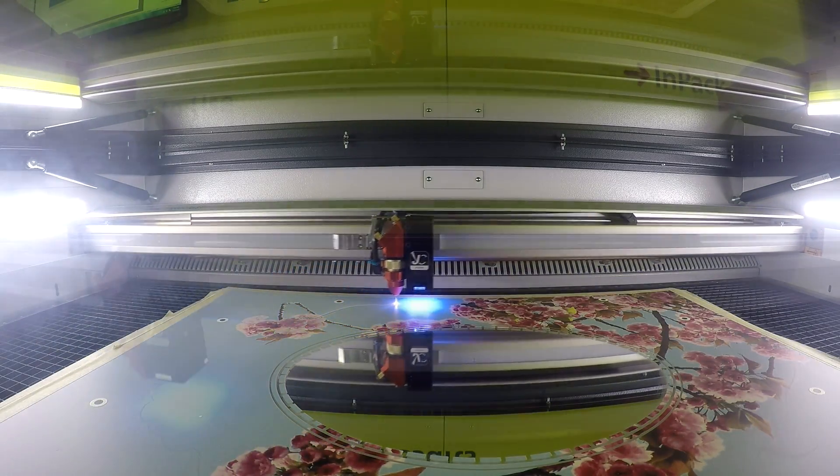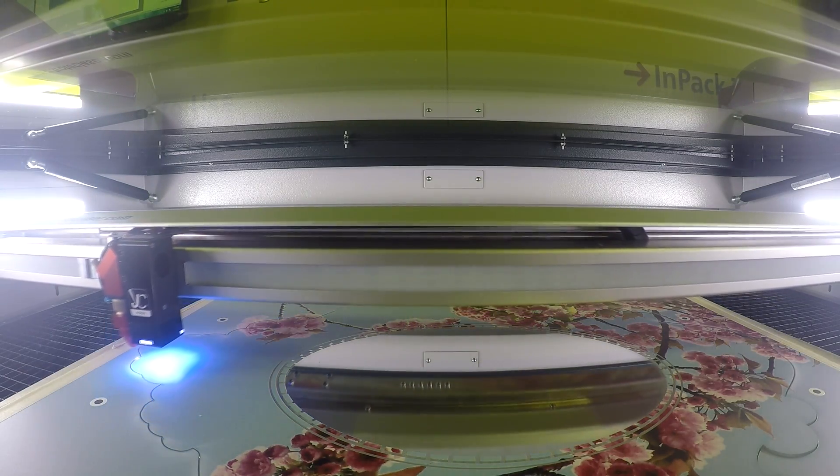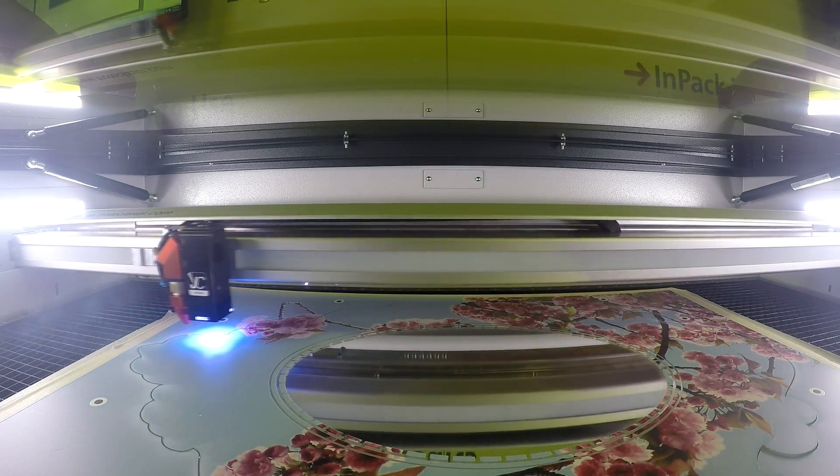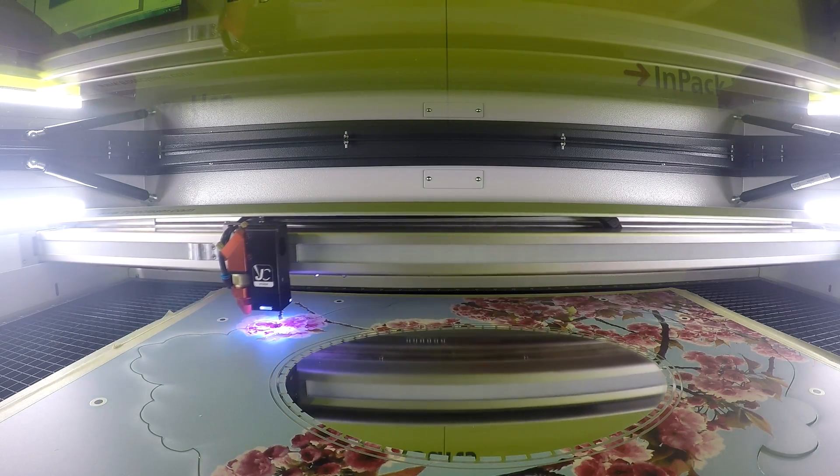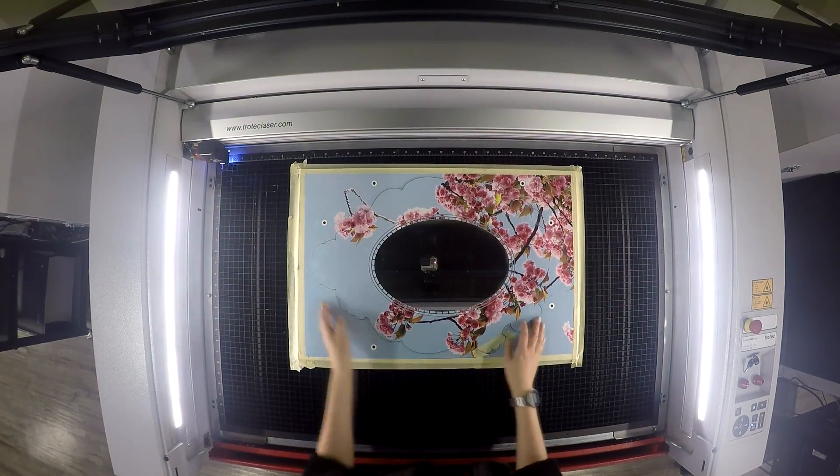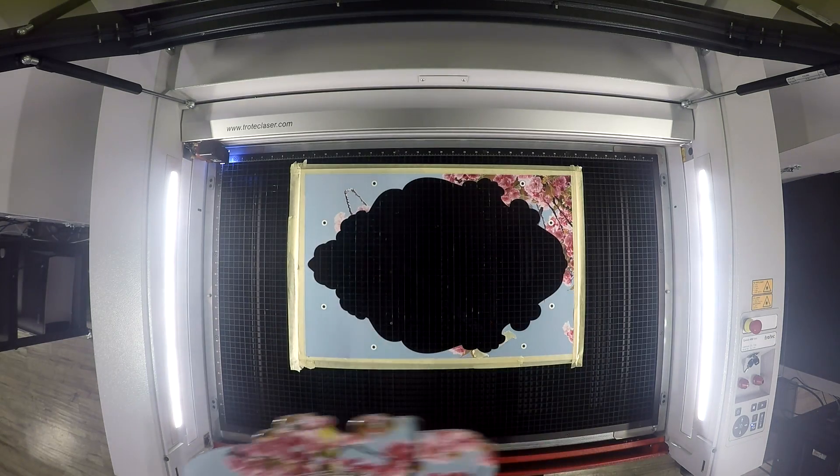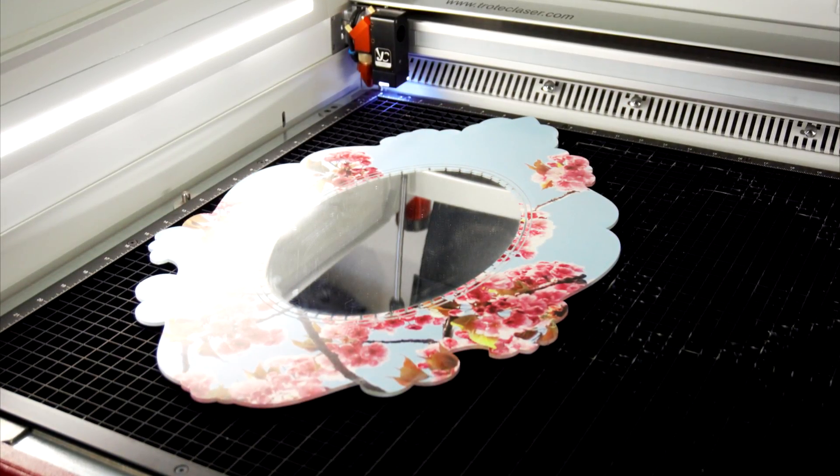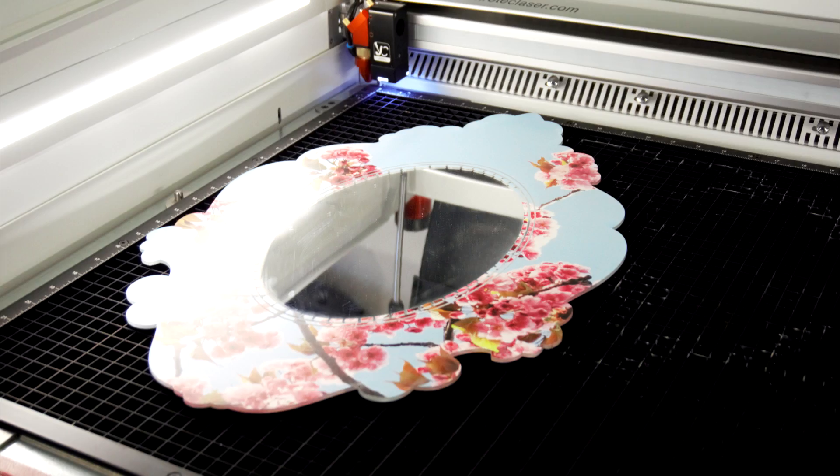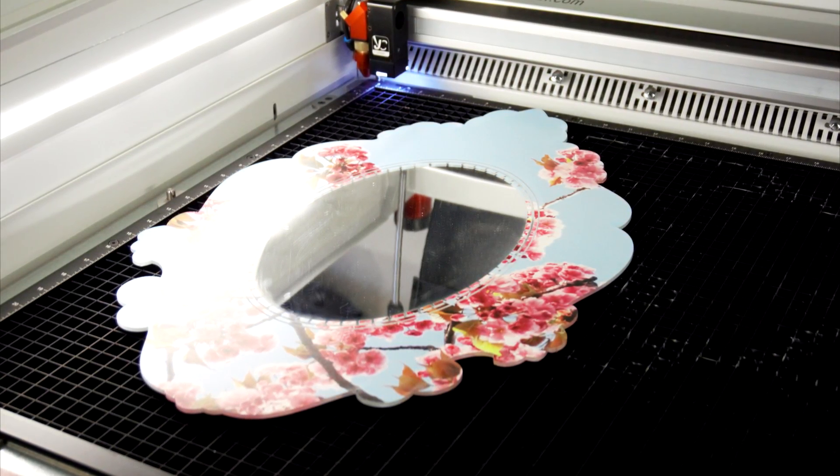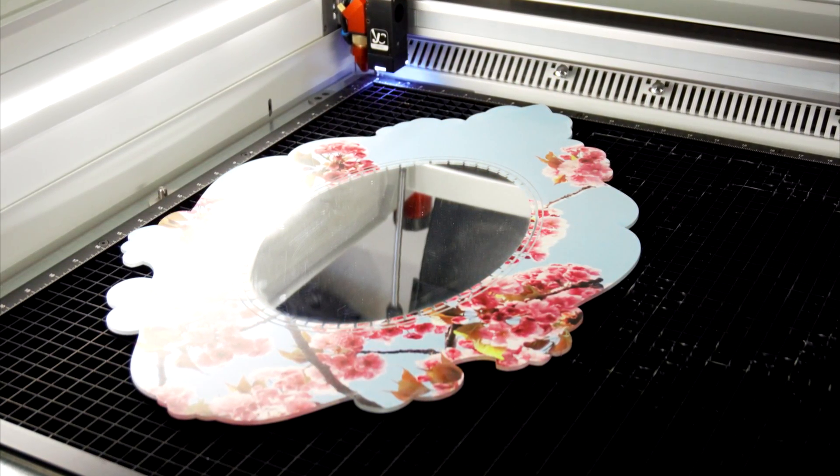TroGlass mirror is an extruded acrylic glass with a reflective surface. It is a perfect alternative to real glass mirror since it is lighter and has a higher breakage resistance. Engraved designs on the front or even reverse engraved for a different finish. The material has a gloss finish. It has a thickness of three millimeters and it comes in a sheet of 24 by 48 inches. It's great for decorations, jewelry, displays, and even interior design.